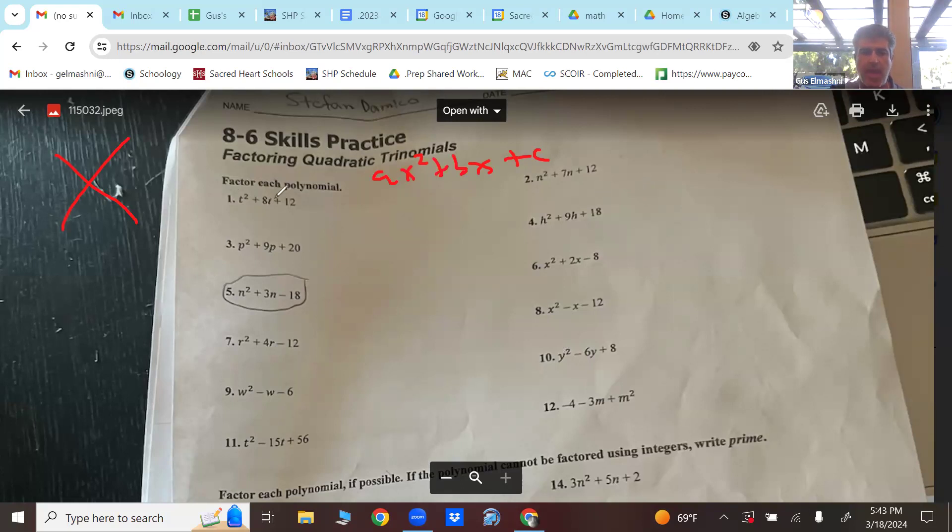Now, the first 12, a is going to always equal 1 for the first 12 here. A, the coefficient of the squared term. Like, so you have t squared, t squared, n squared, r squared, w squared, t squared, m squared, y squared, x squared, x squared, h squared, n squared. So a is always going to be 1 in this case.